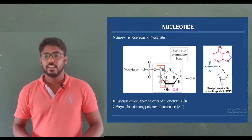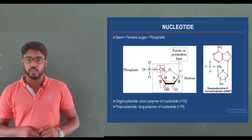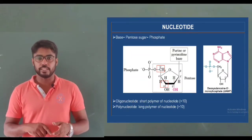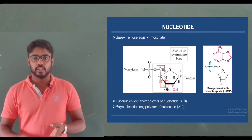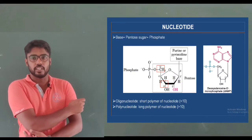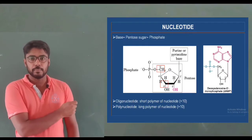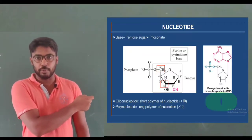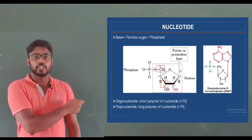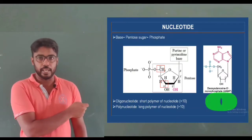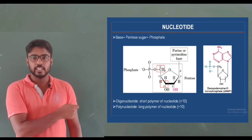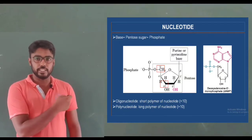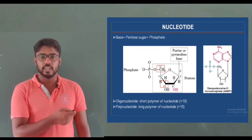Now we can look at nucleotides. As mentioned earlier, nucleotides are the building blocks of DNA. Each nucleotide contains one pentose sugar, one nitrogenous base, and a phosphate group. In this figure, you can see the nitrogenous base, the sugar molecule, and the phosphate group. In the next picture, you can see one example of a nucleotide.